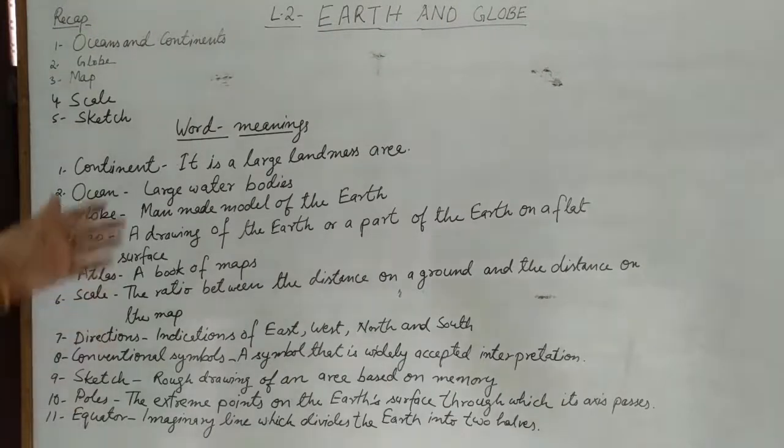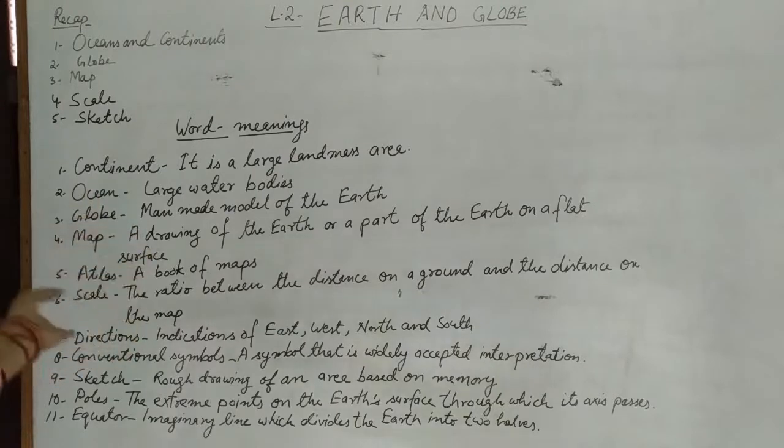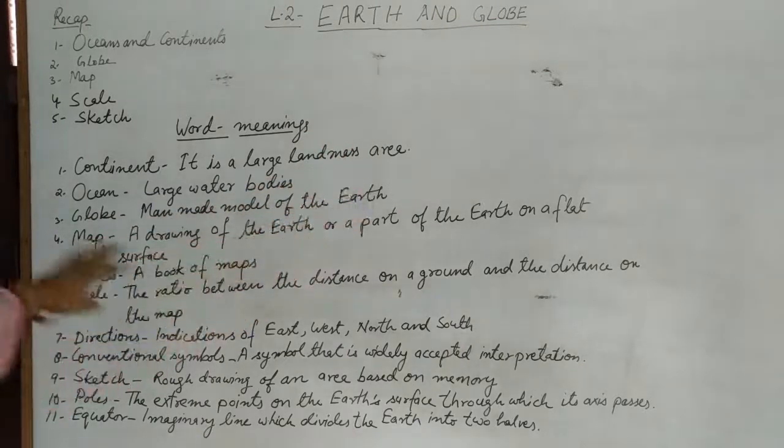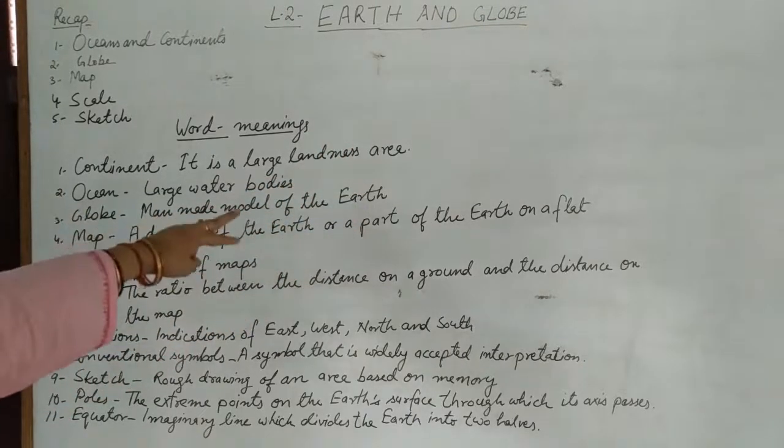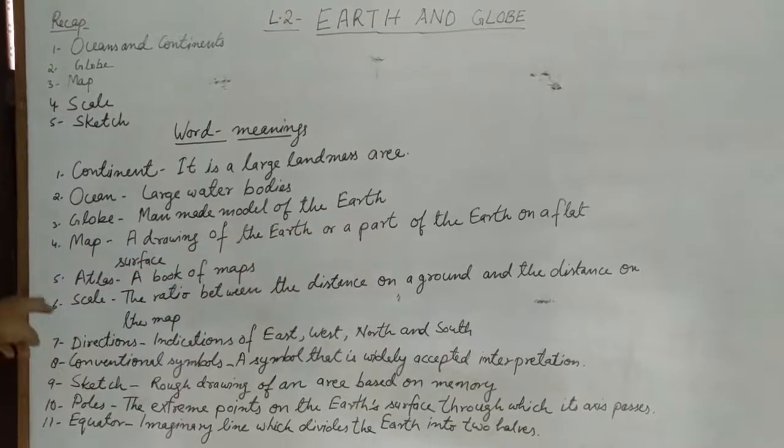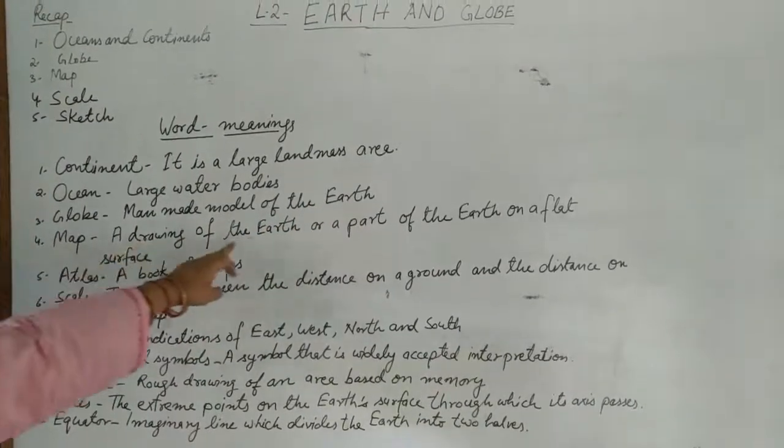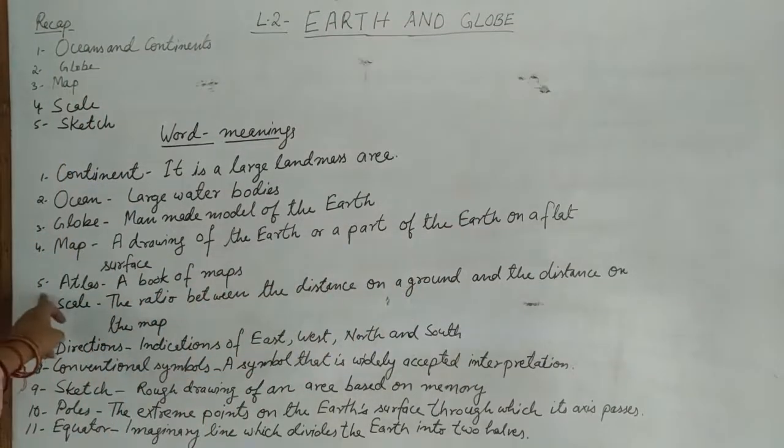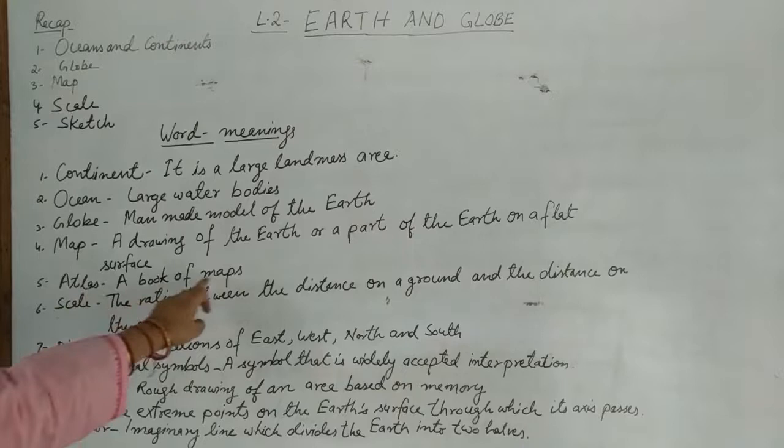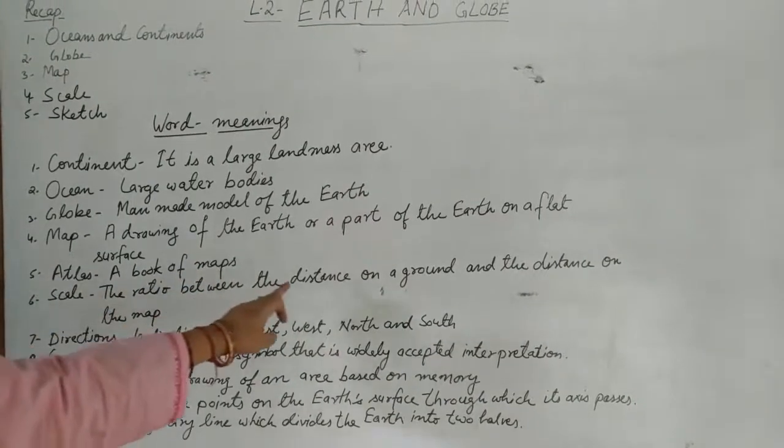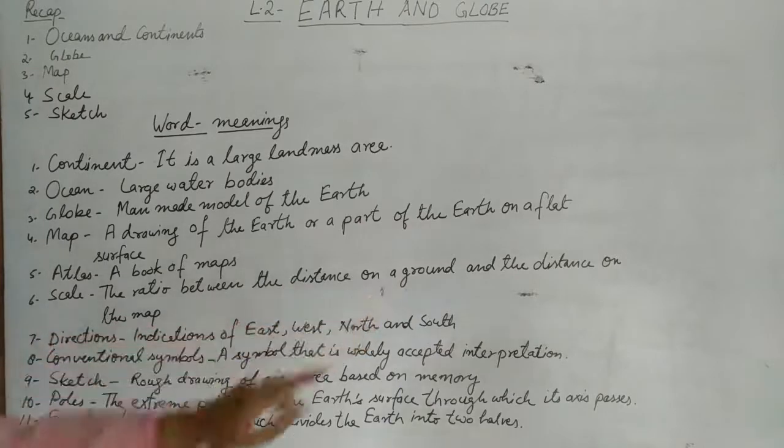Students, here are some word meanings you have to write in your notebook. Number one is continent - it is a large landmass area. Number two is ocean - large water bodies. Number three is globe - man-made model of the earth. Number four: map - a drawing of the earth or a part of the earth on a flat surface.